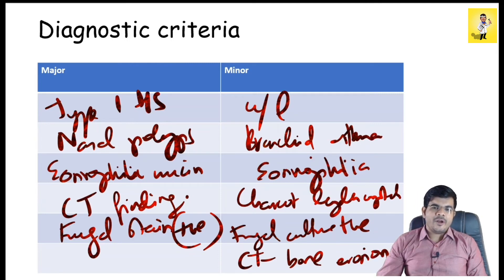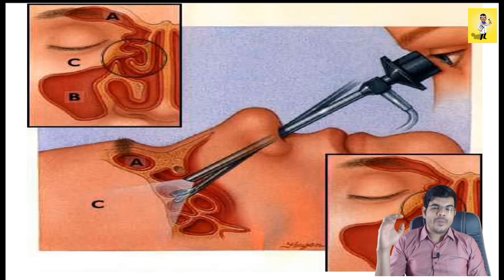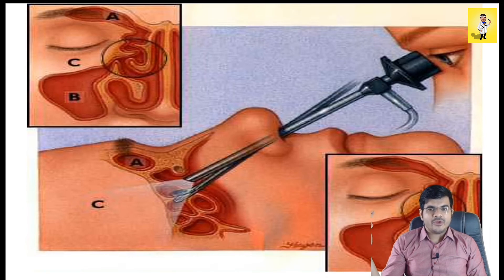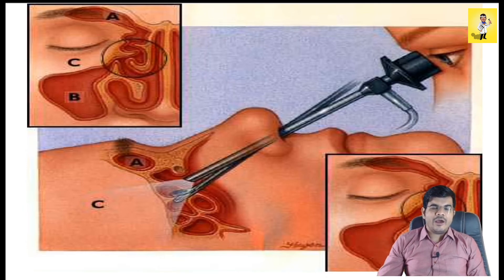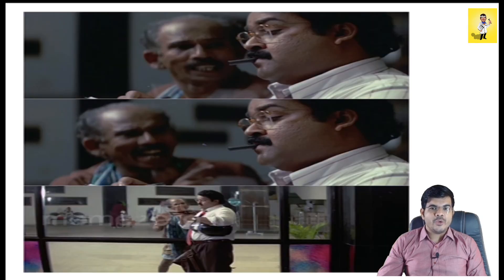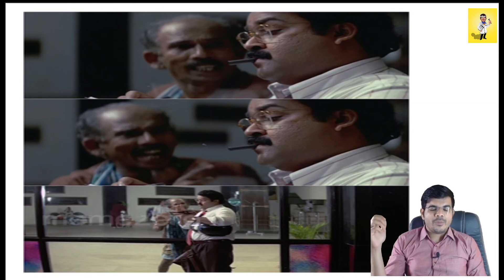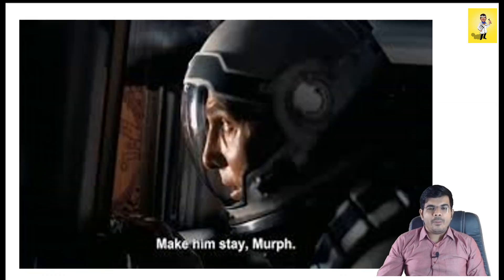For treatment of AFRS, you must first perform endoscopic sinus surgery to remove all of the fungal hyphae — only by removing the antigen can the allergic reaction be stopped. Additionally, surgery is needed so that the mainstay of treatment, the steroid nasal spray, can reach the sinuses properly; without surgery the polyps obstruct delivery of the nasal spray.